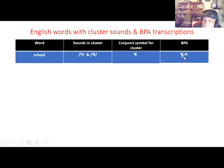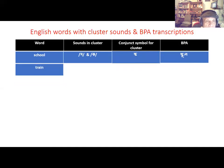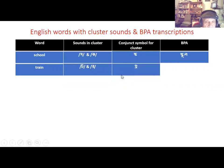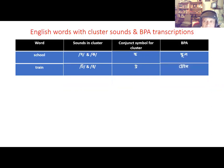So the transcription of 'school' in BPA will be written with the vowel lengthener. Next we look at the word 'train' — T-R-A-I-N. Here we have the cluster sound /tr/, which is formed from the two English sounds /t/ and /r/, and the conjunct symbol for this cluster sound in BPA is the tr symbol.